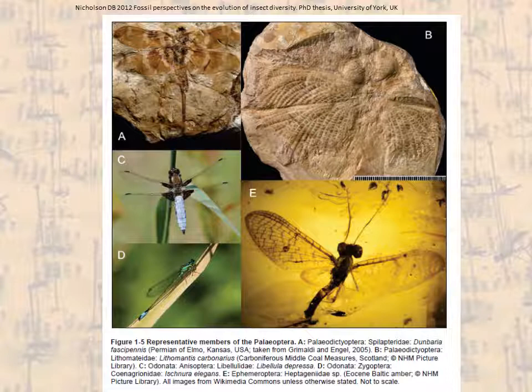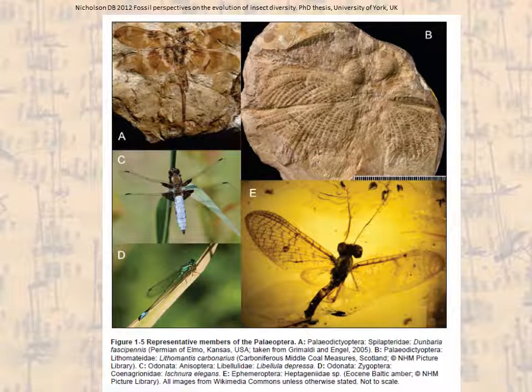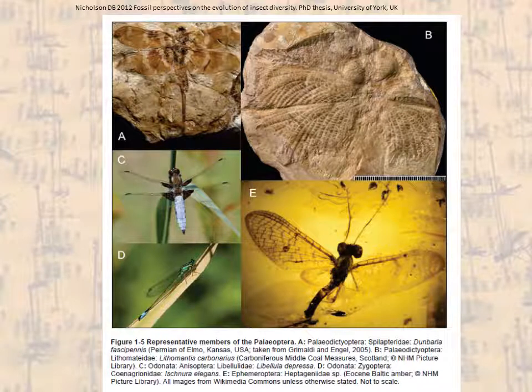There's then a gap in the fossil record of insects until about 350 million years ago — the Carboniferous period in which coal deposits were laid down. At that point we get large numbers of winged insects for the first time, including the most primitive group of winged insects, the Palaeoptera, which are unable to fold their wings flat over their backs. Modern groups that are palaeopterous include the dragonflies and damselflies, Odonata, which have about 5,000 living species.